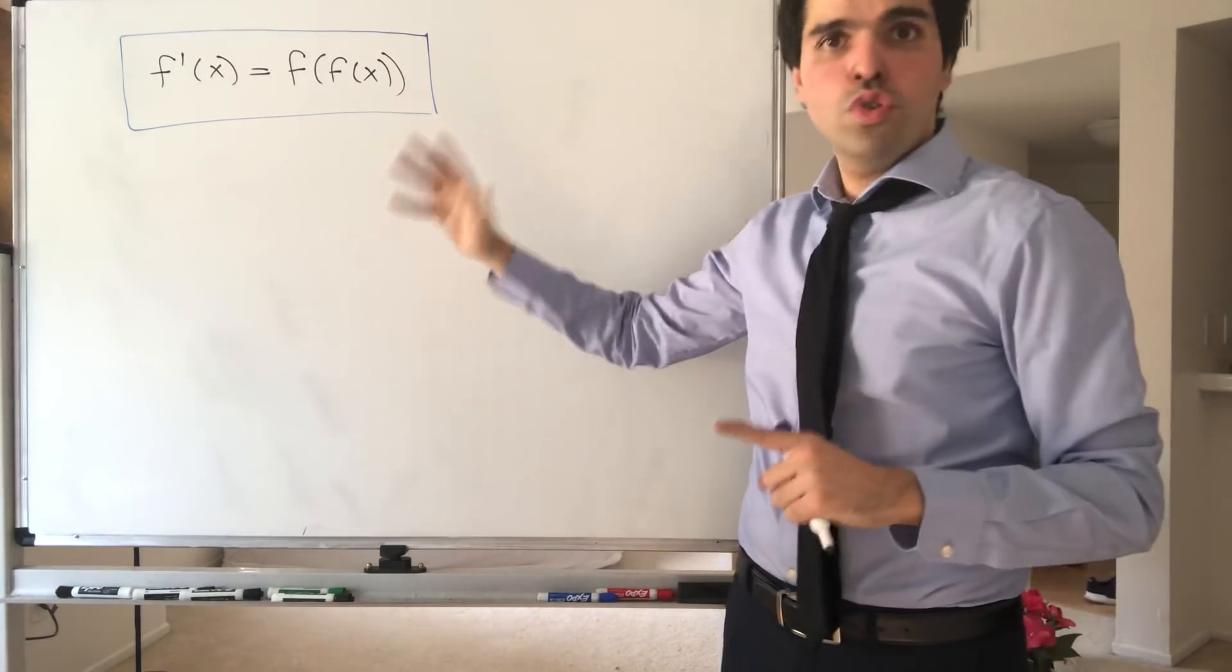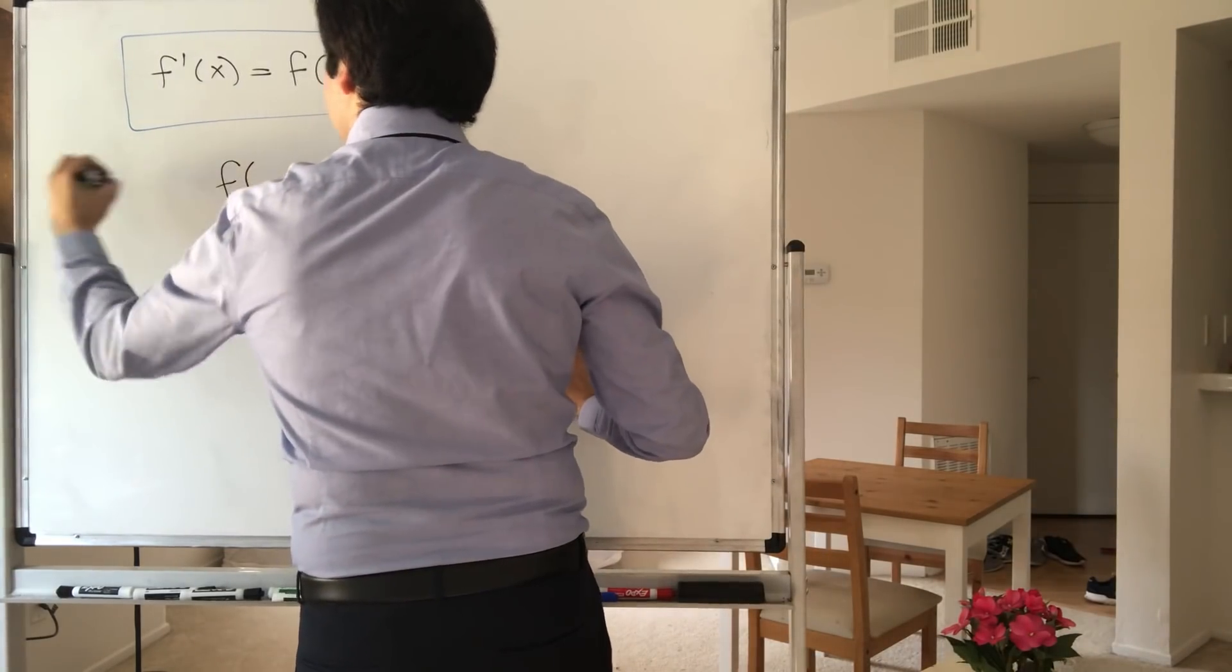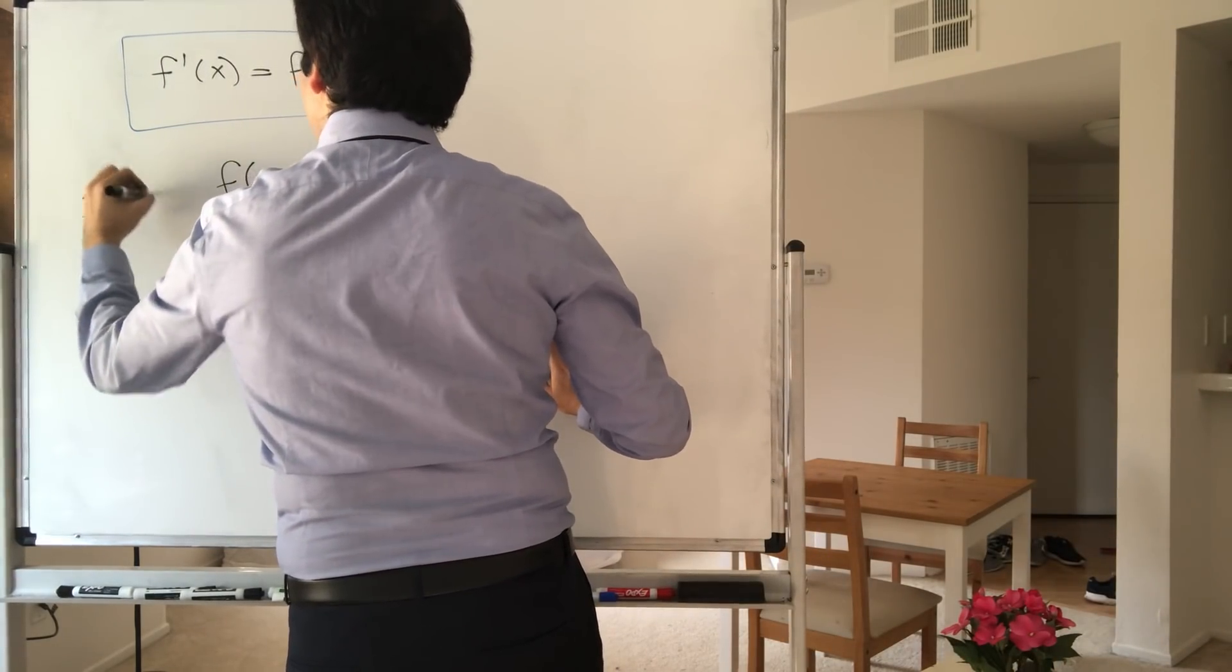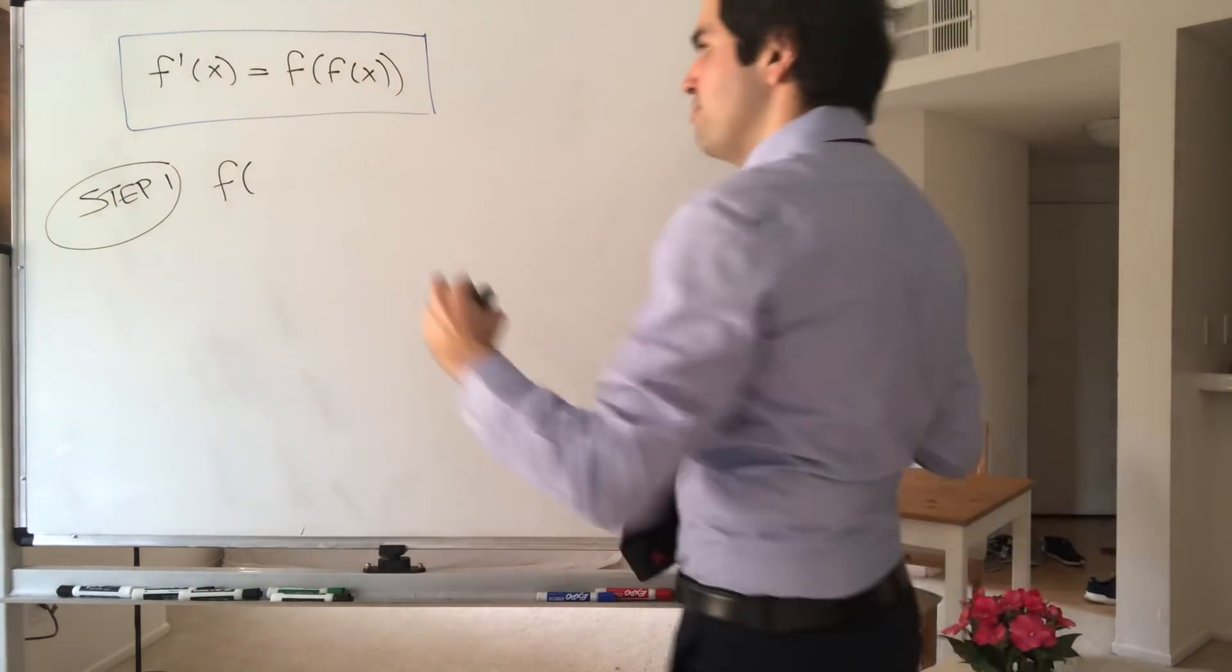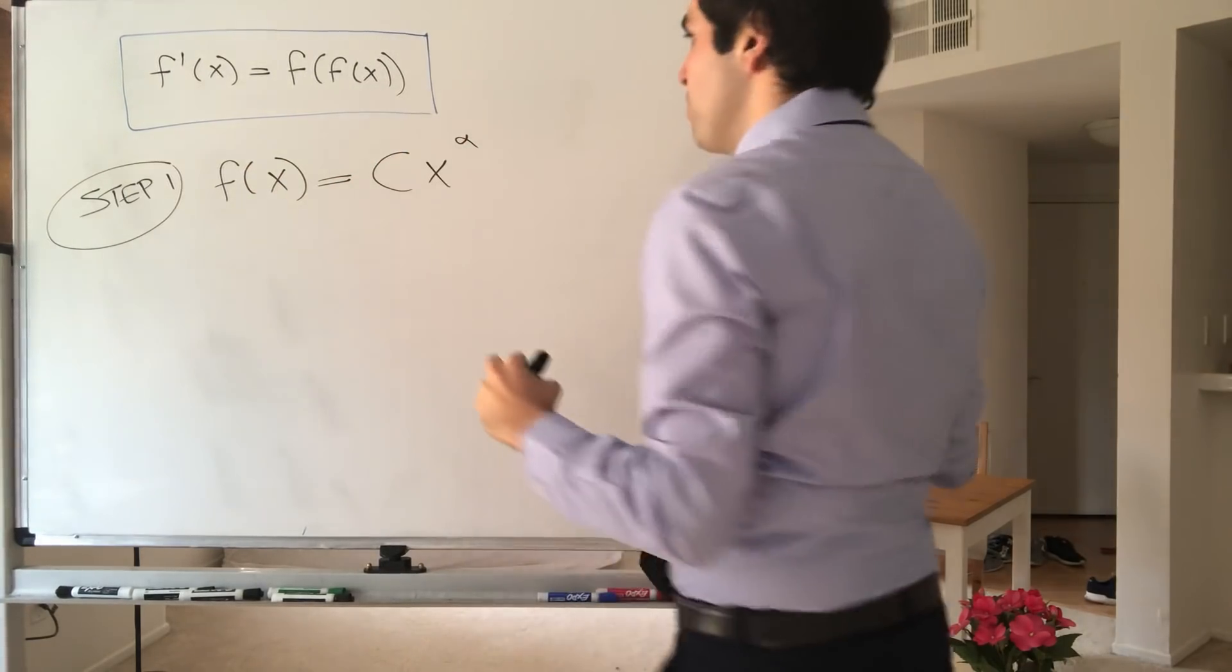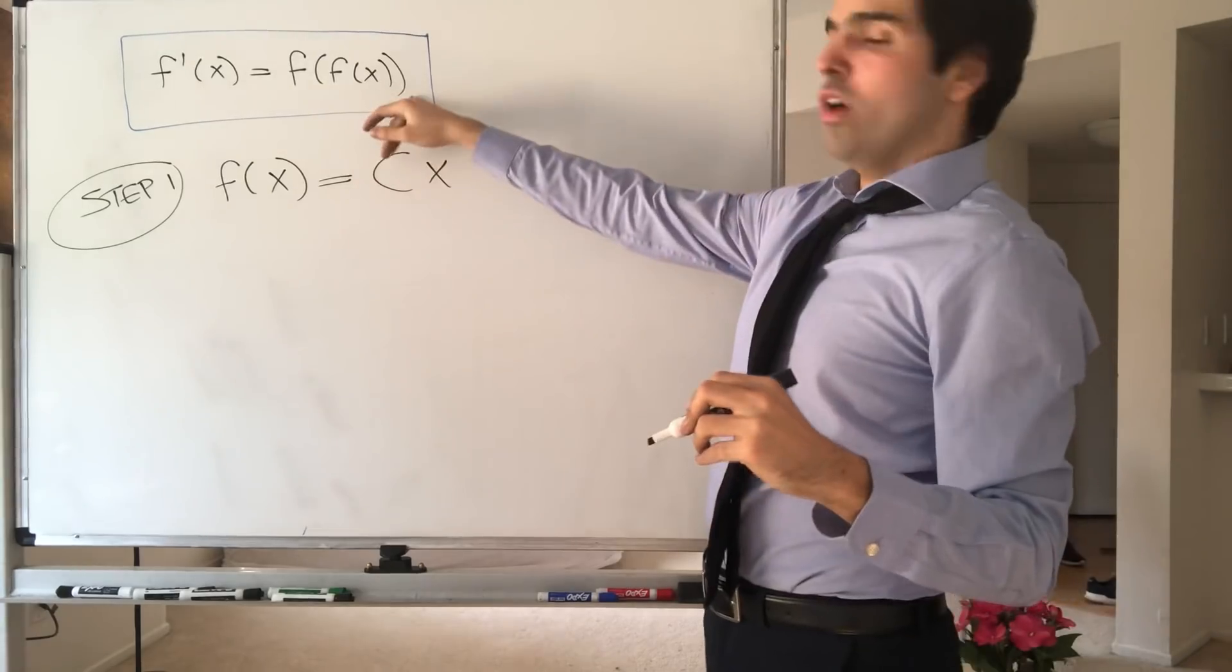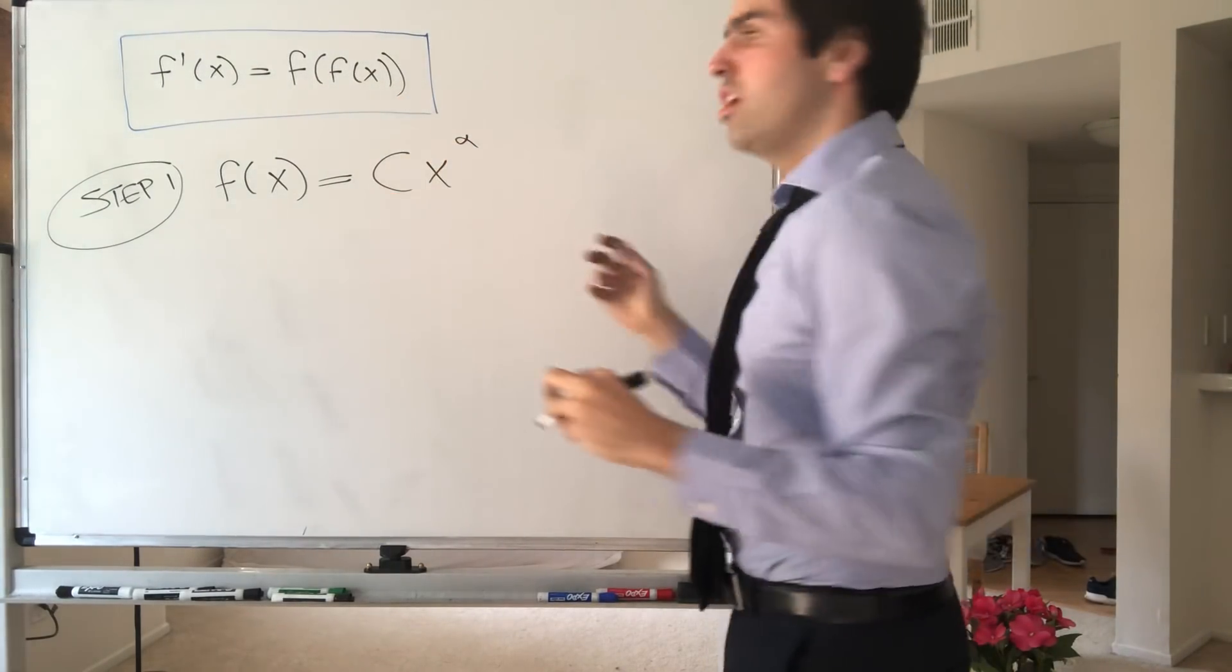And first of all, as usual, assume f is a power function because trig functions or exponential functions are unlikely to solve this in my opinion. So assume f equals cx to the alpha. And first of all, while the zero function does solve this, so assume c is non-zero.